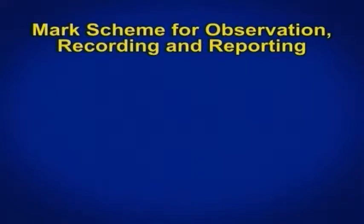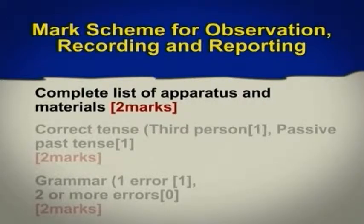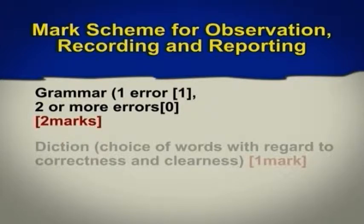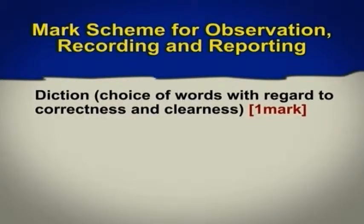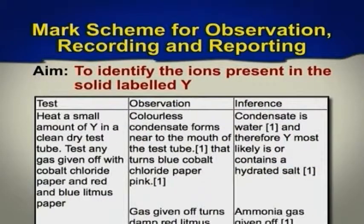The mark scheme for observation recording and reporting is as follows: correct sequencing of the report (example: aim, apparatus, results, table, and conclusion) — one mark. Complete list of apparatus and materials — two marks; one non-essential piece missing — one mark. Correct tense, that is third person passive past tense — two marks; two marks awarded for grammar, one error — one mark; two or more errors — no marks. Diction, choice of words with regard to correctness and clearness — one mark. Tables: neatly constructed with four distinct sides — one mark.